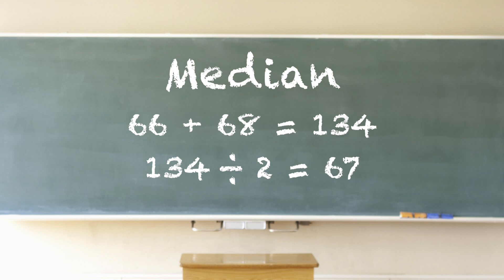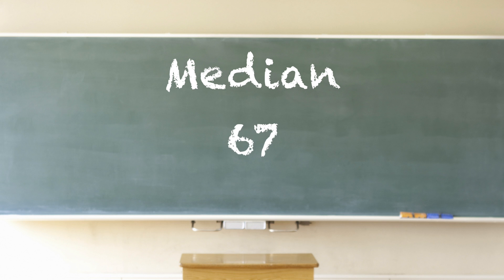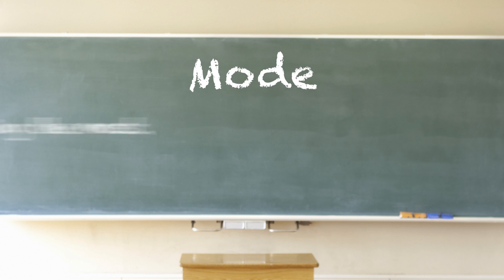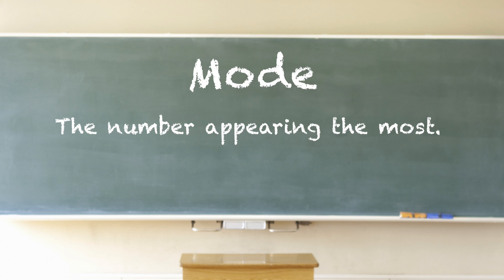134 divided by 2 equals 67, so 67 is the median.